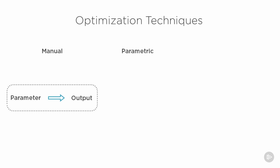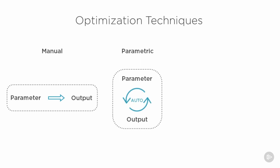The second one is called parametric optimization, which is basically an automation of the manual process. So instead of manually going in and checking each parameter and solving it, you can have a program that goes in and changes the model for you.